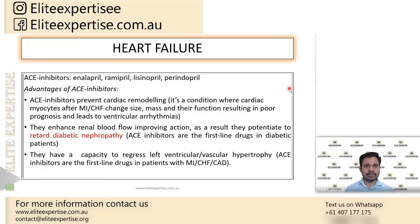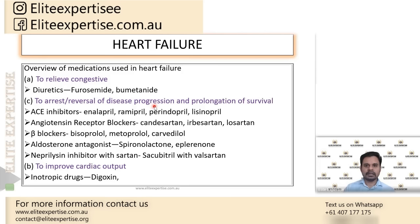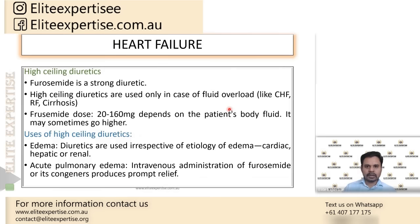That is why putting the patient on an ACE inhibitor, beta blocker, or spironolactone prevents cardiac remodeling and ventricular hypertrophy. ACE inhibitors, ARBs, beta blockers, and aldosterone antagonists all prolong the survival of the patient.